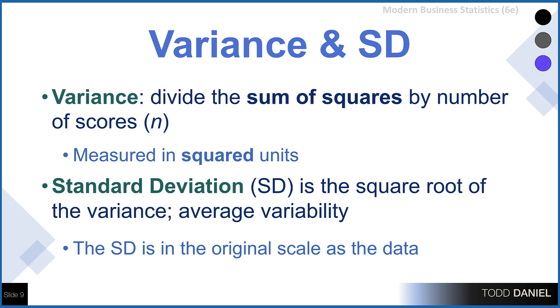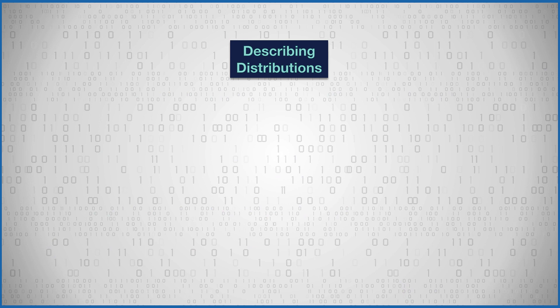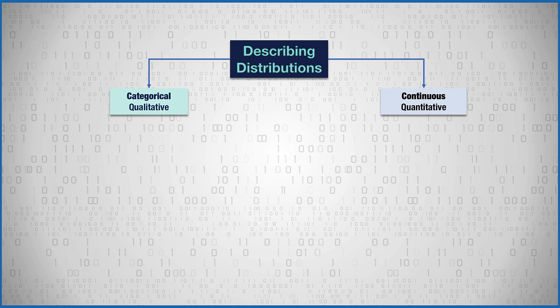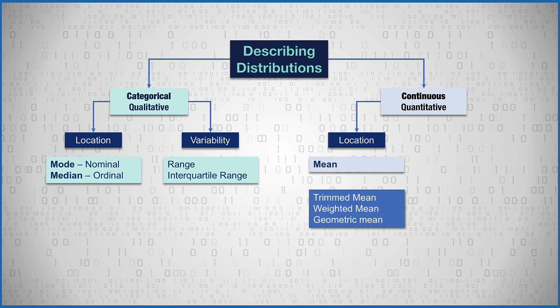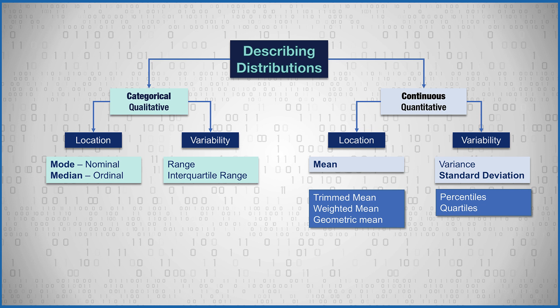Let's summarize how we describe distributions. We have both categorical (qualitative) and continuous (quantitative) data. For categorical data, measures of location use the mode for nominal data and either the mode or the median for ordinal data; measures of variability use the range or the interquartile range. For continuous data, we use the mean if possible, but if the data are skewed we might use a trimmed mean, a weighted mean, or a geometric mean. The variability measures for continuous variables are the variance and the standard deviation. We could also use percentiles or quartiles, which are needed to calculate the interquartile range.